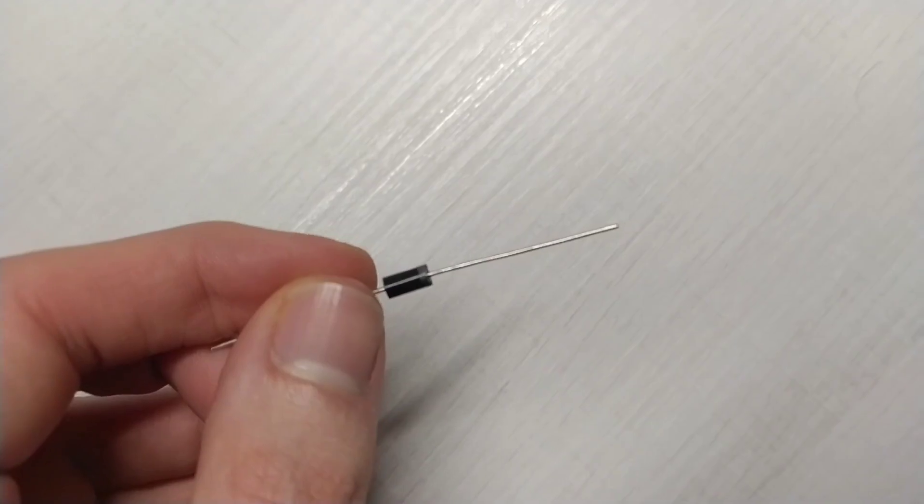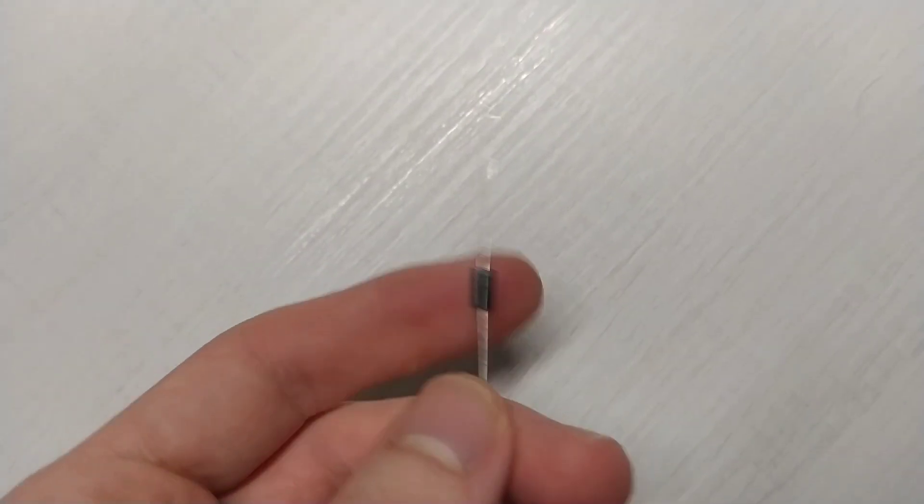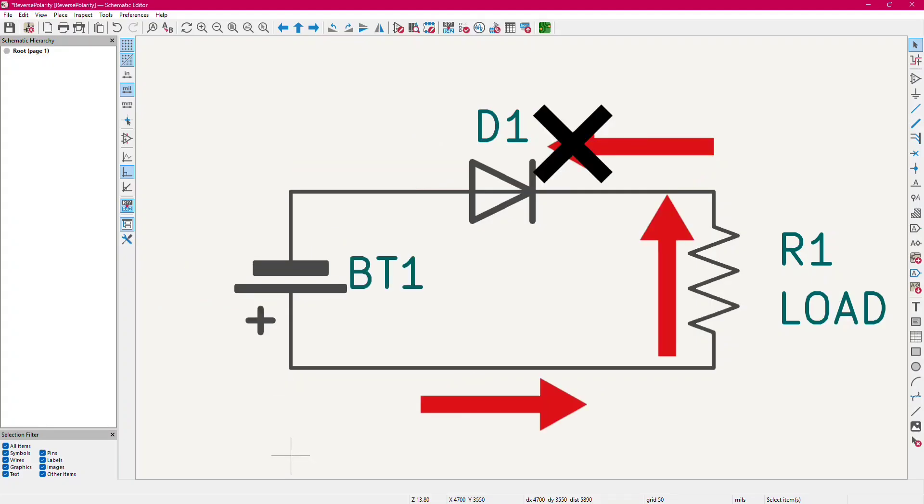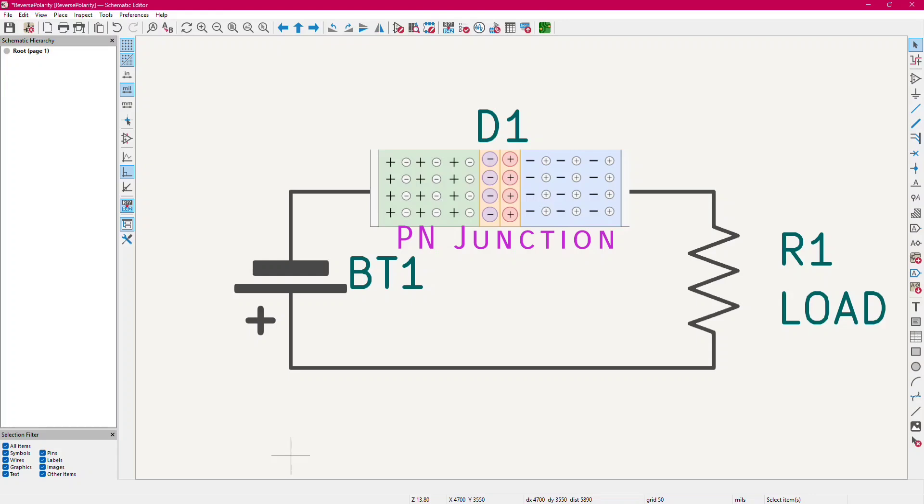The first and simplest form of reverse polarity protection is made using only a diode. When connected correctly, the current goes from the battery through the diode and the load and then back to the battery. But when connected backwards, the diode blocks the current because of the intrinsic PN junction and so we are safe. Let's try this out.